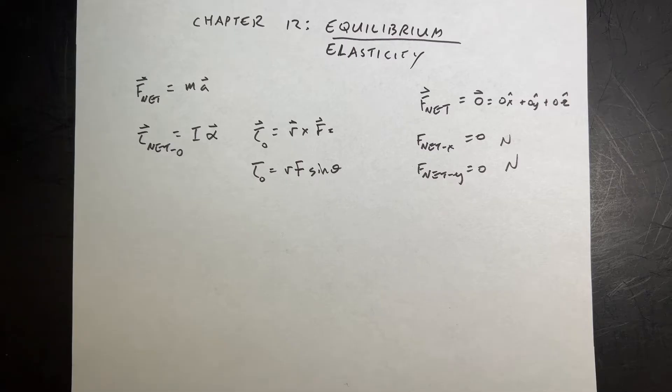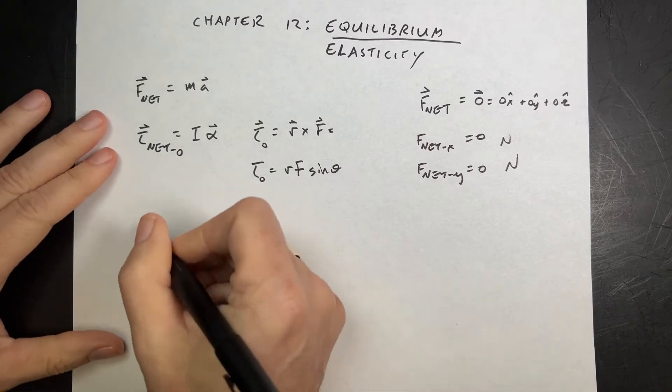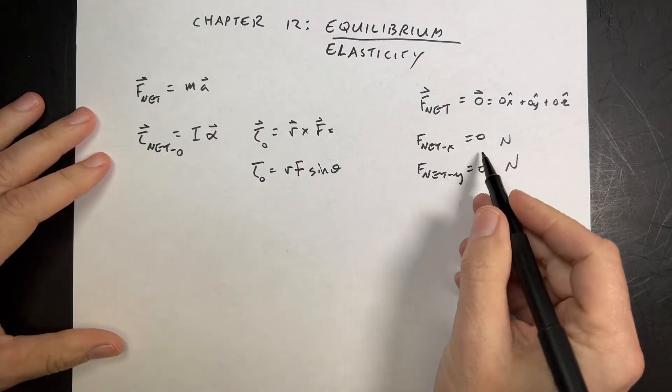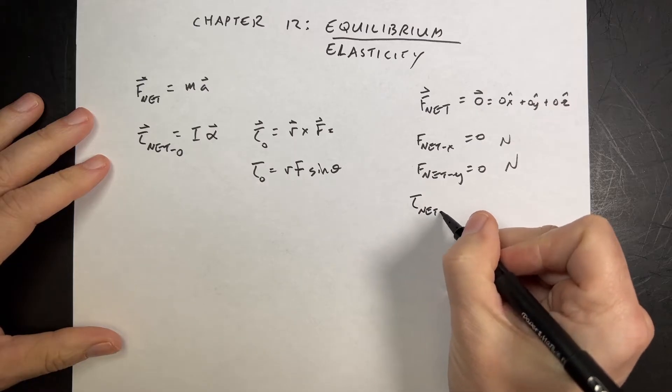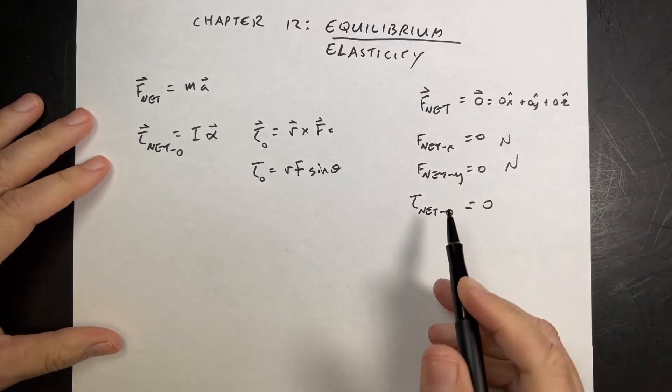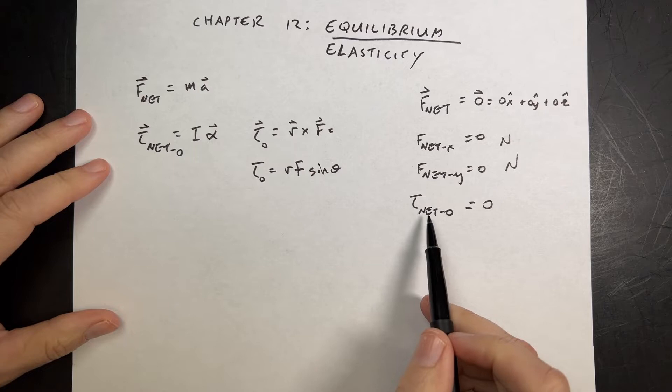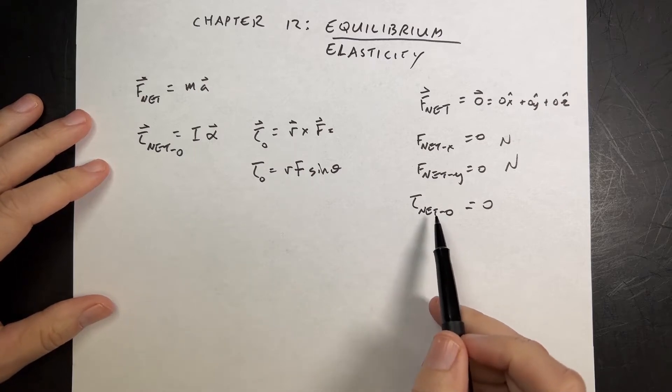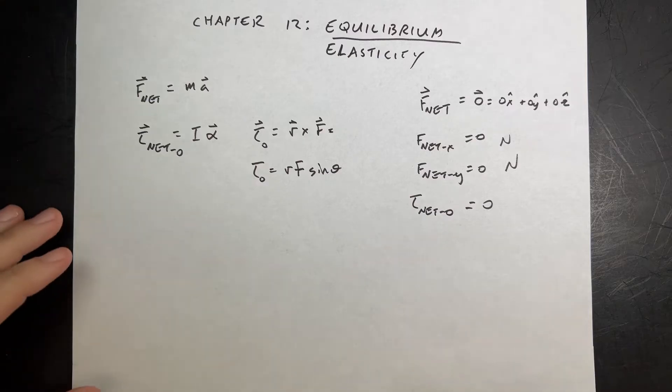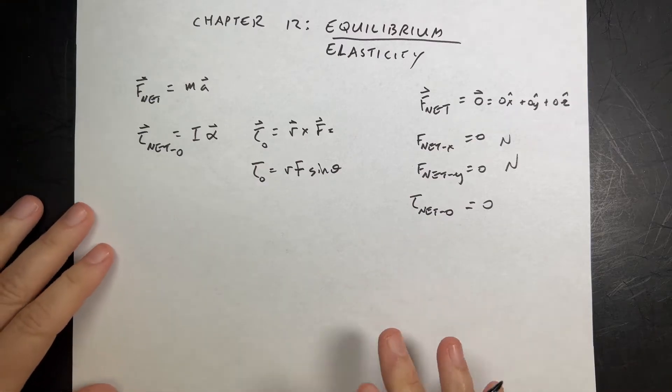Okay, so we really get, in two dimensions, we really get the following three equations. So f net x is equal to zero, f net y is equal to zero, and then torque net O equals zero. And so that would be the torque about some point as around a fixed axis so you can write it as a scalar.